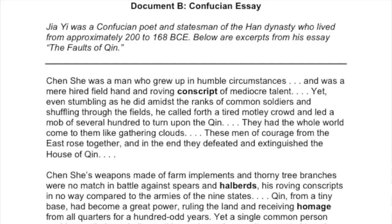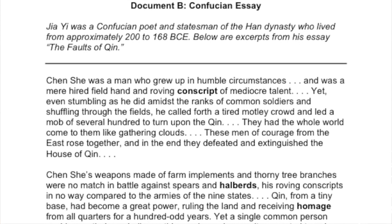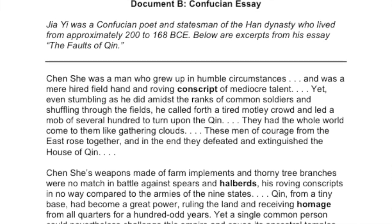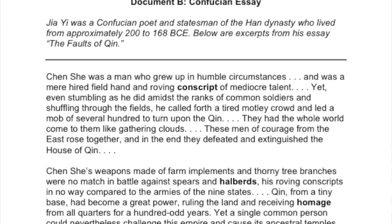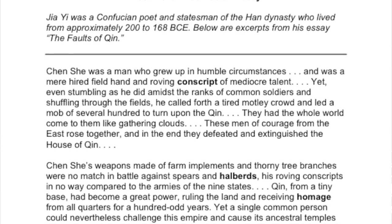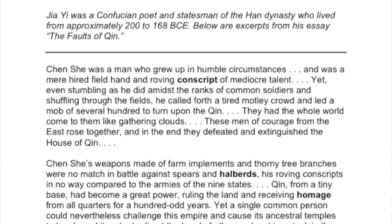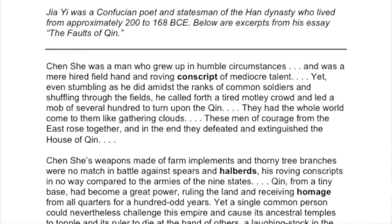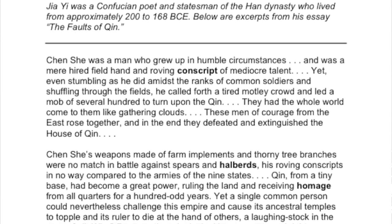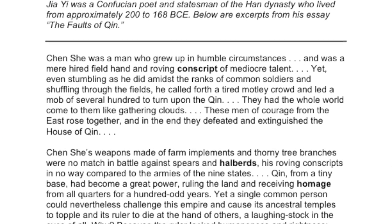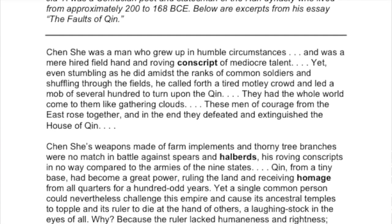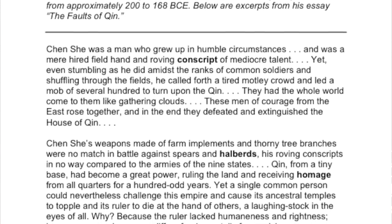Now I want to know other reasons for why they fell, so I'm going to go to the next document — a Confucian essay. You might remember from our last essential question we learned about Confucius and his philosophies, very much focused on relationships and how society can make you better. Let's see why this document says the Qin Dynasty fell. Jia Yi was a Confucian poet and statesman of the Han Dynasty who lived from approximately 200 to 168 BCE. Below are excerpts from his essay, 'The Faults of Qin' — so he's going to tell us why the Qin Dynasty was imperfect and possibly why it fell.